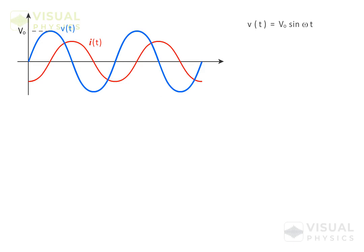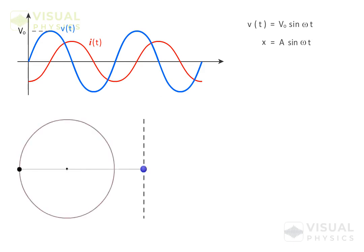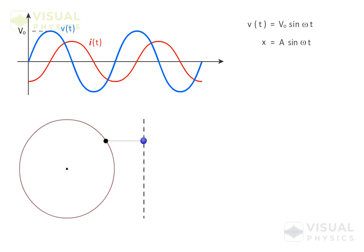This equation is similar to the equation of SHM, which we have already studied, where we had seen that an SHM can be considered as a projection of a uniform circular motion.